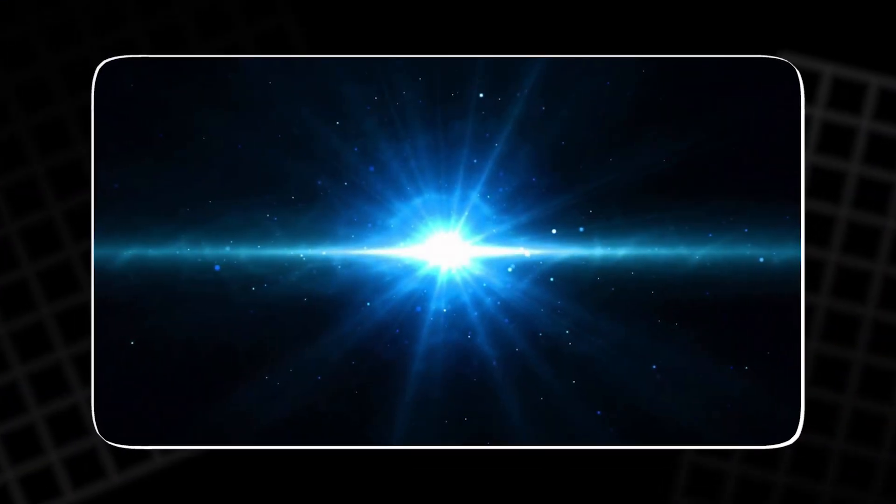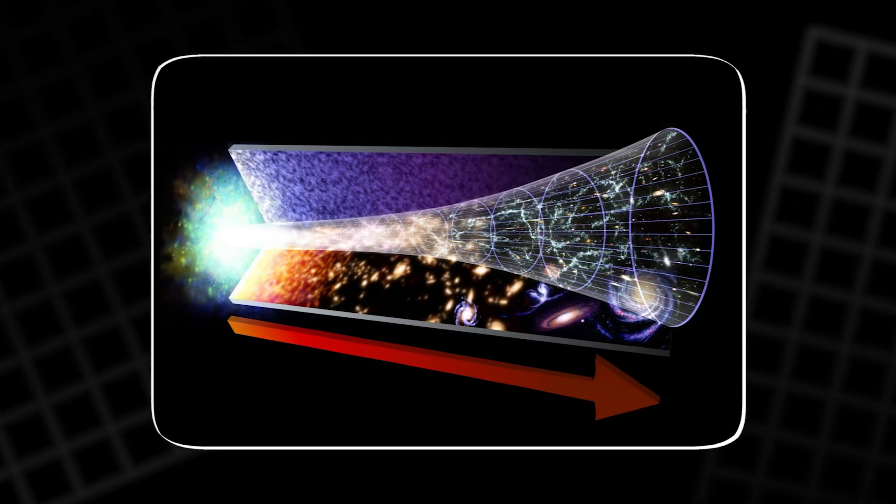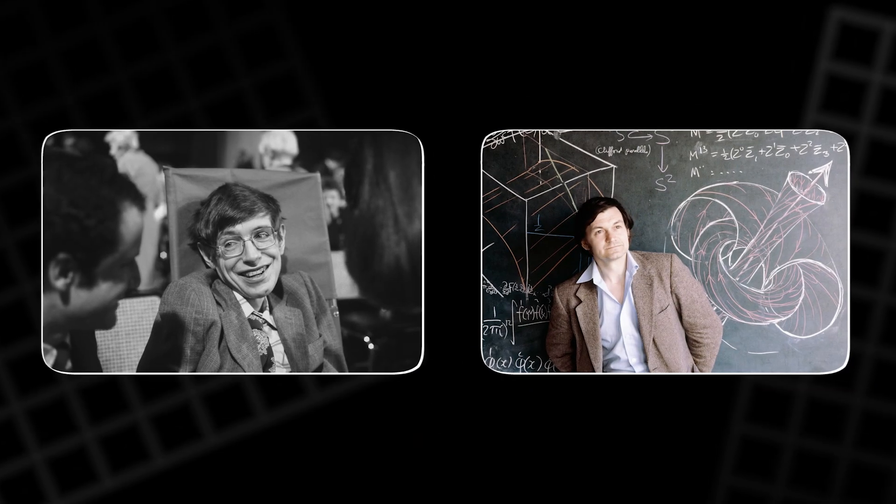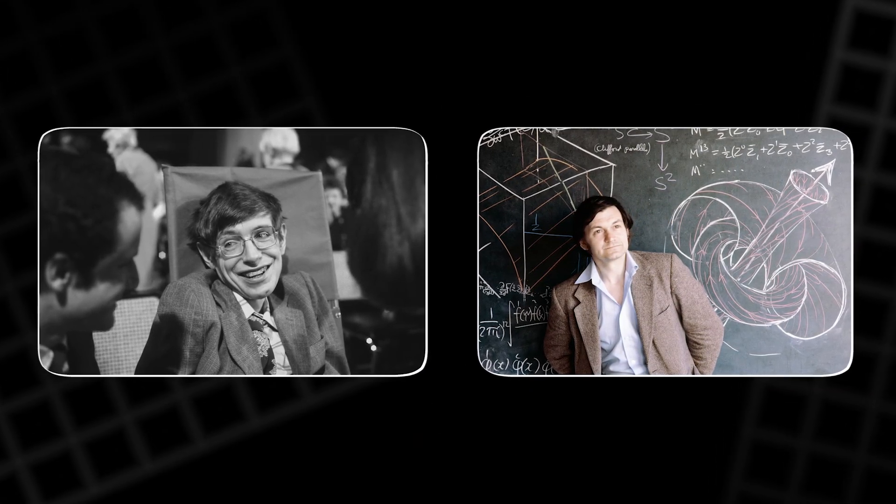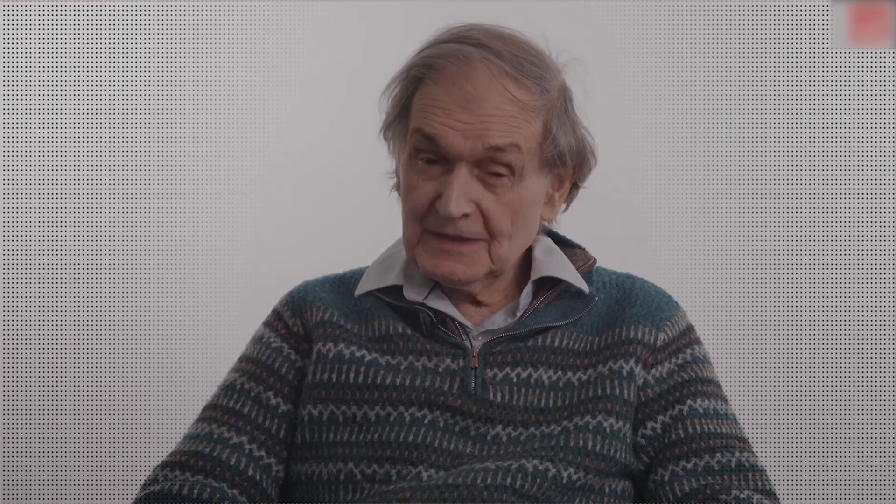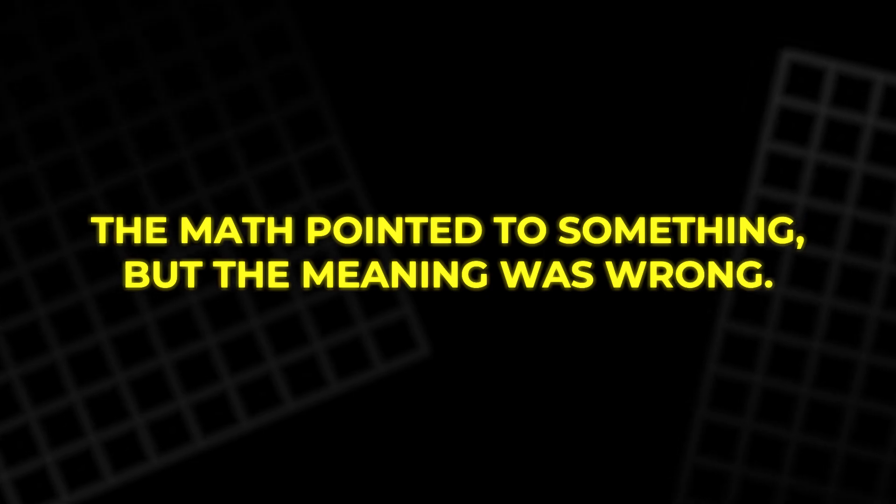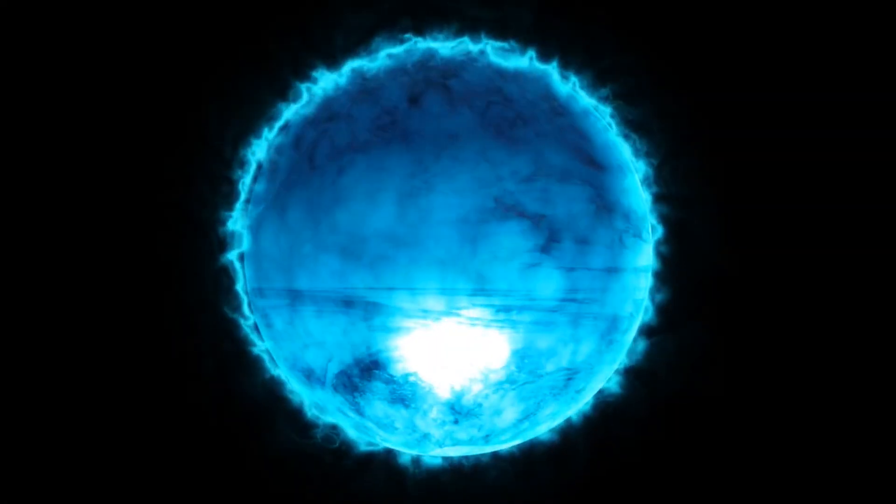You probably heard that the big bang started with a singularity, a point of infinite density where physics breaks down. Stephen Hawking and Roger Penrose even showed that general relativity predicts this singularity. But here's what most people never hear. Almost every physicist today believes the singularity probably never existed. The math pointed to something, but the meaning was wrong.